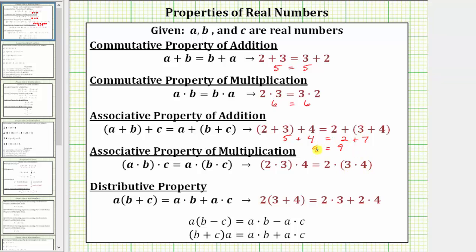Verifying this property, we simplify inside the parentheses first. On the left, two times three is equal to six. The left side simplifies to six times four. On the right side, we simplify three times four first, which is 12. The right side simplifies to two times 12. Simplifying further: six times four equals 24, and so does two times 12.